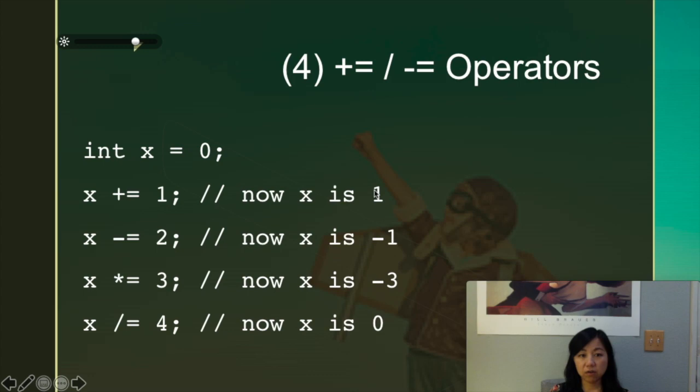From here, 1 minus 2, it becomes minus 1. Minus 1 times 3 becomes minus 3. And then minus 3 divided by 4, what would it be? As we know, integer divided by integer is going to be a whole integer, which in this case is 0.